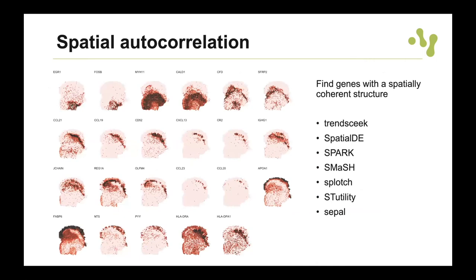There has also been quite a lot of development on methods to detect genes with high spatial autocorrelation — essentially genes with a spatially coherent structure in the tissue. One tool from our lab is called NNSVG, developed by Alma Andersson, a very talented computational biologist. These tools are particularly useful if you want to find marker genes and characterize tissue entirely based on molecular data.